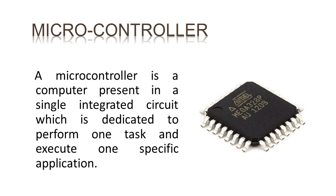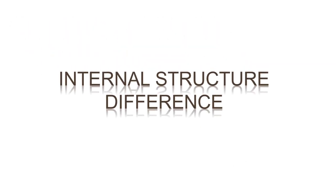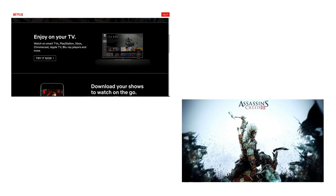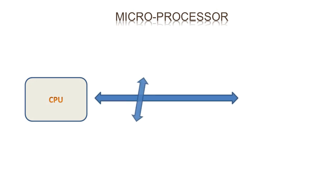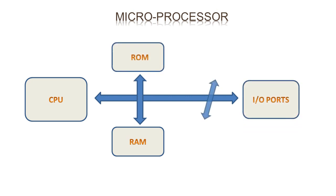Now let us see the difference between a microprocessor and microcontroller in terms of internal structure. Microprocessors are used in applications where the task is not predefined — from light applications like creating documents to intensive ones like gaming or media streaming. The amount of memory required depends on the application. A microprocessor chip contains only the CPU, and all memory elements and IO interfaces — RAM, ROM, input/output ports, serial interfaces, and timers — are connected to it externally.